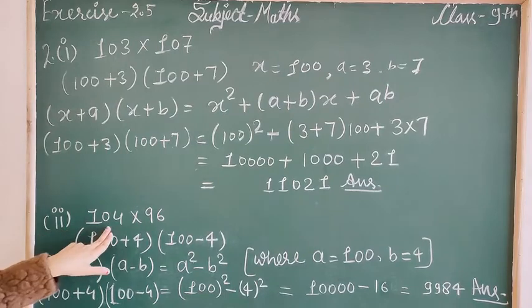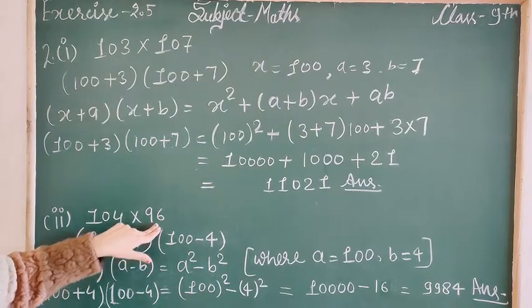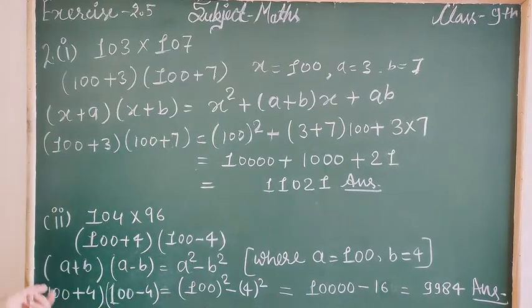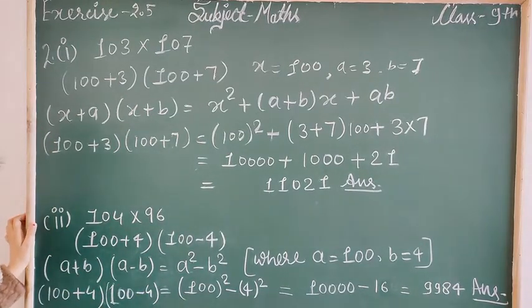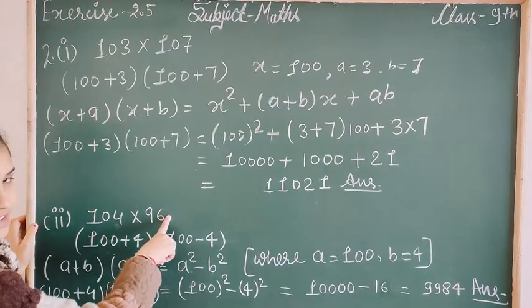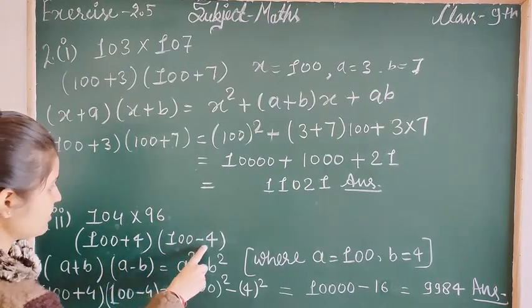The next question is 104 × 96. This is also formula-based. We can write 104 as 100+4 and 96 as 100-4.